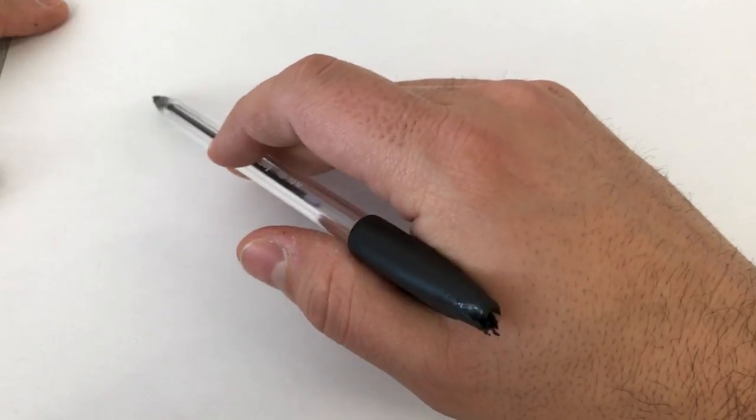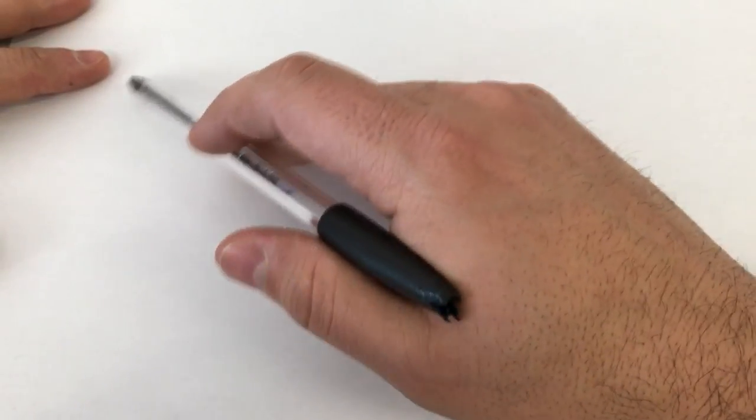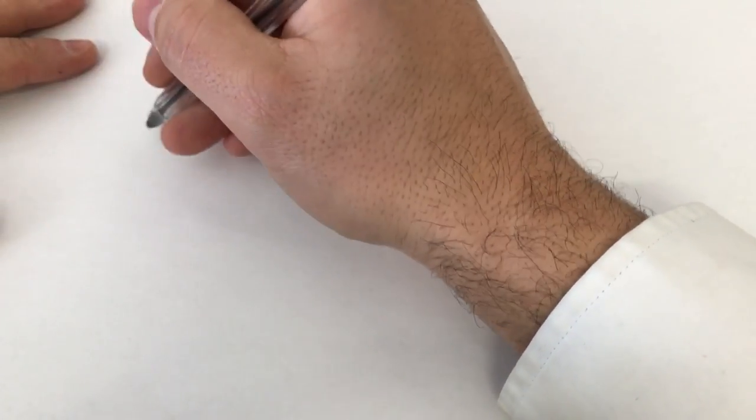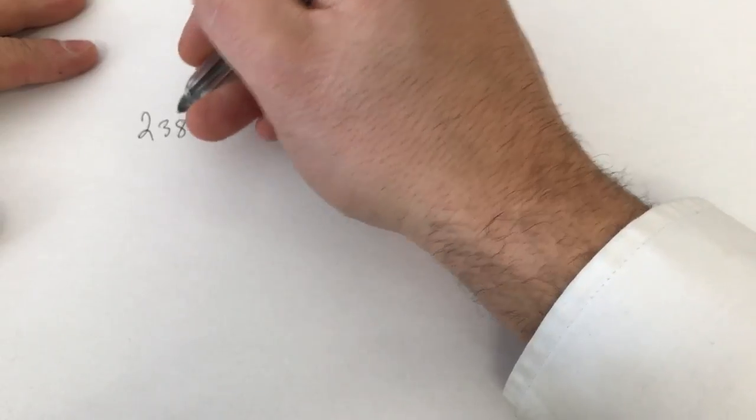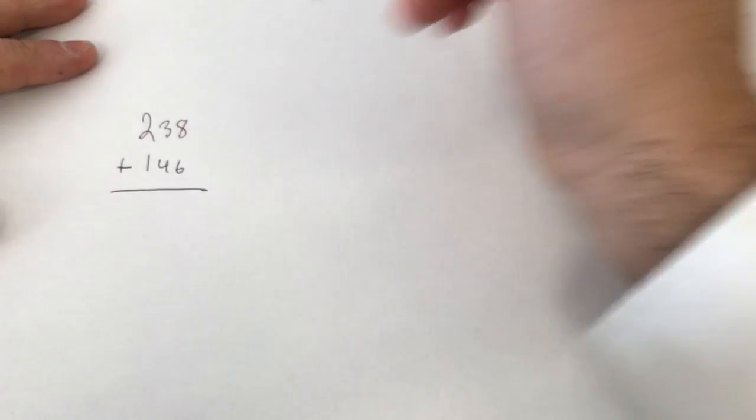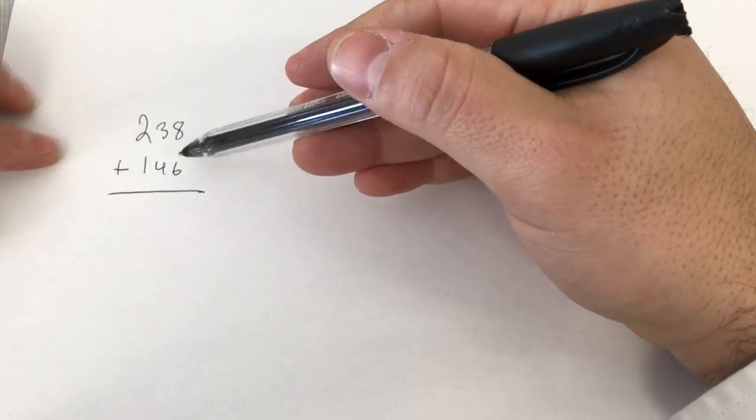Now what I'll be doing is showing you what I would be doing in my head. So although I'm writing it down, you're going to be doing the things that I'm showing you in your head. Let's write down some numbers here. Let's say we had 238 plus 146. So these are two fairly large numbers.